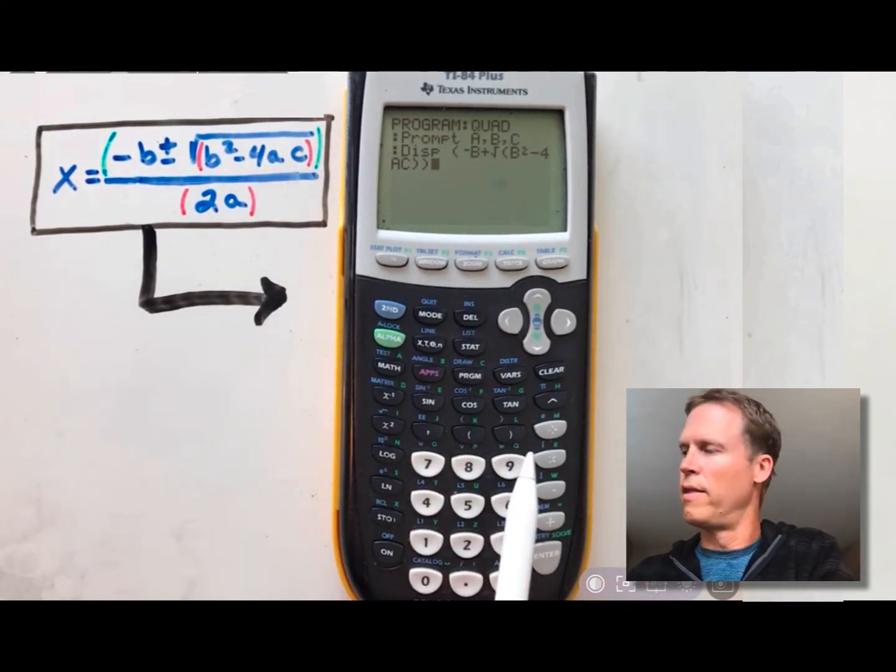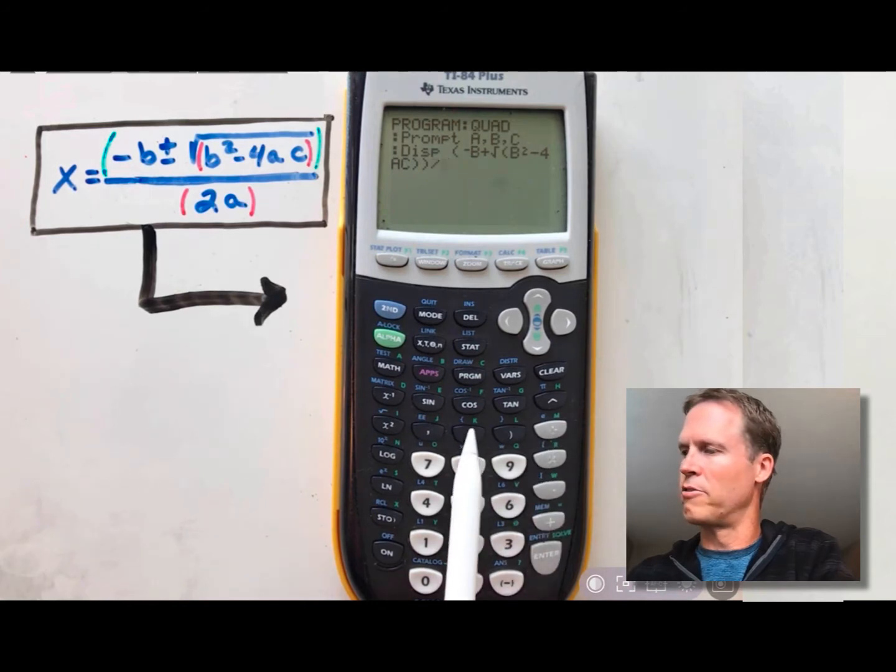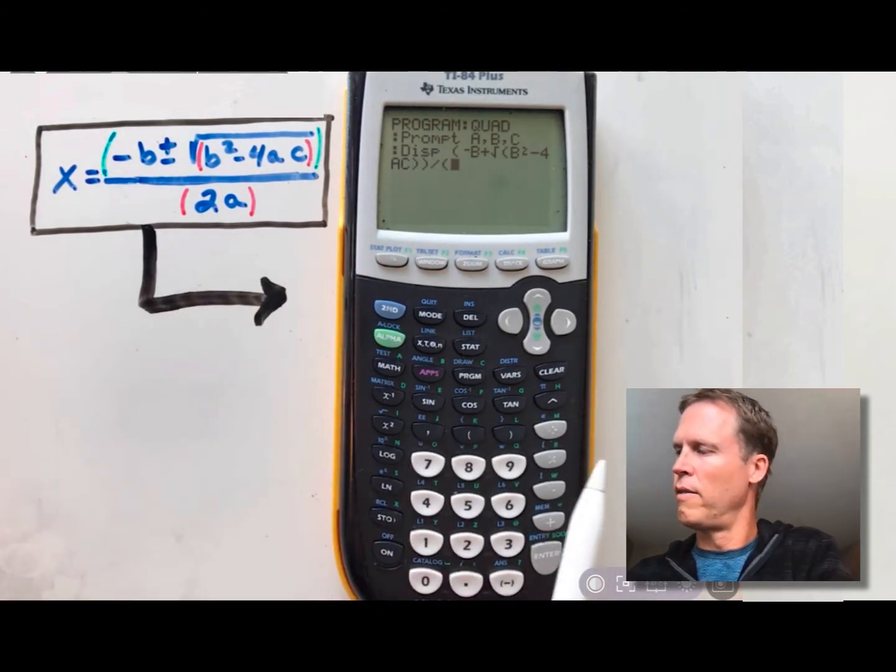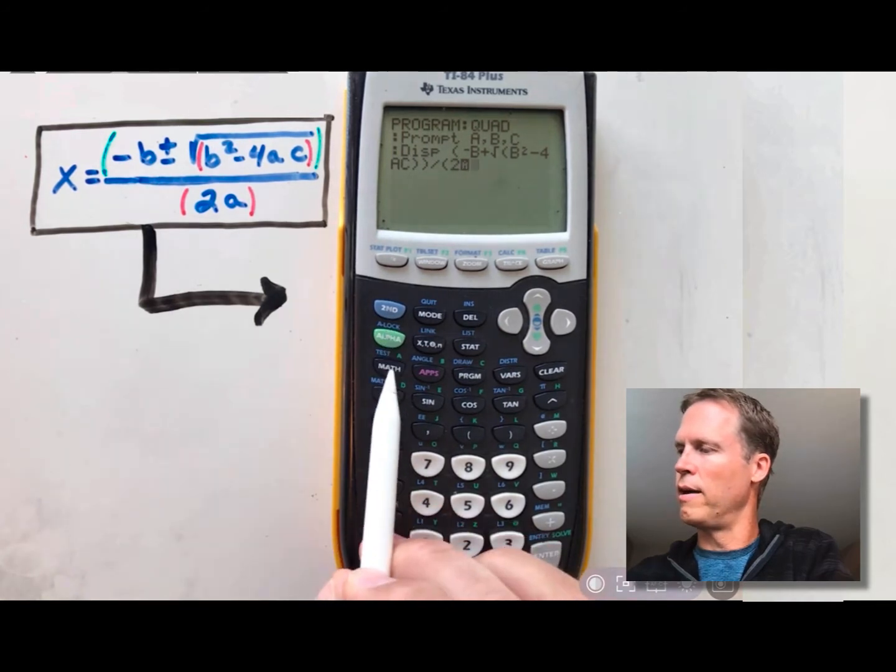That's the second one you see here. Then I'm going to divide by the denominator, which has two things in it, so I'm going to group that with a pair of parentheses as well. And then you're going to go 2 alpha A. Close the parentheses.